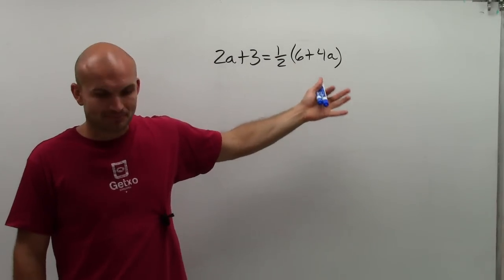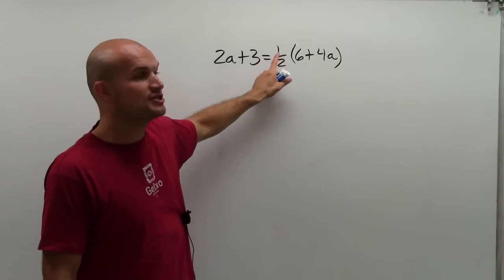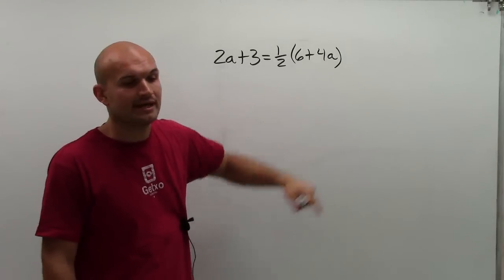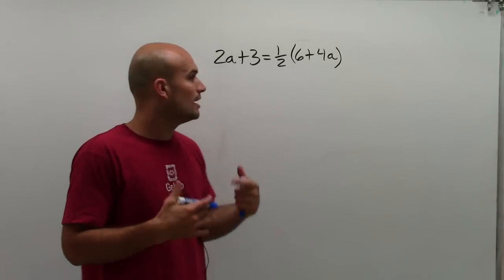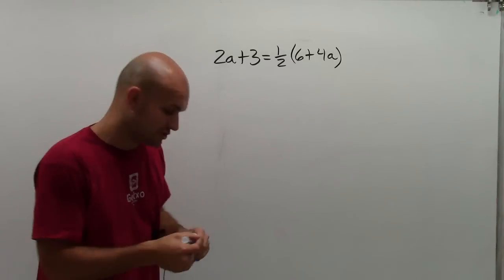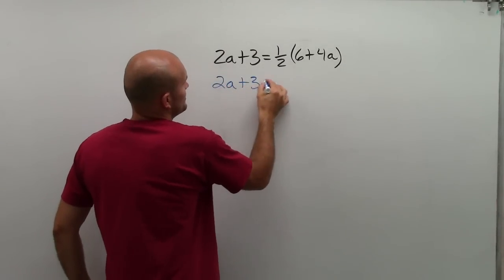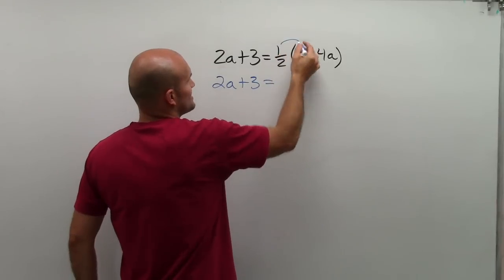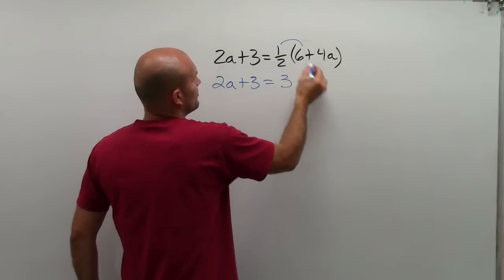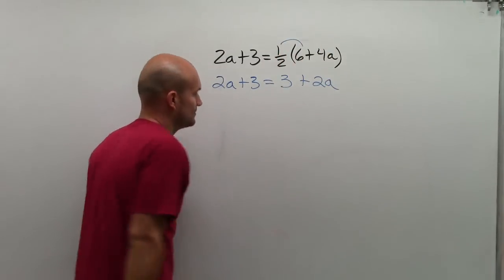On the right side, though, I see that I have multiplication of 1/2 times 6 plus 4a. So what I can do is apply that by using the distributive property. Therefore, I obtain 2a plus 3 equals 1/2 times 6, which is 3, plus 1/2 times 4a, which is 2a.